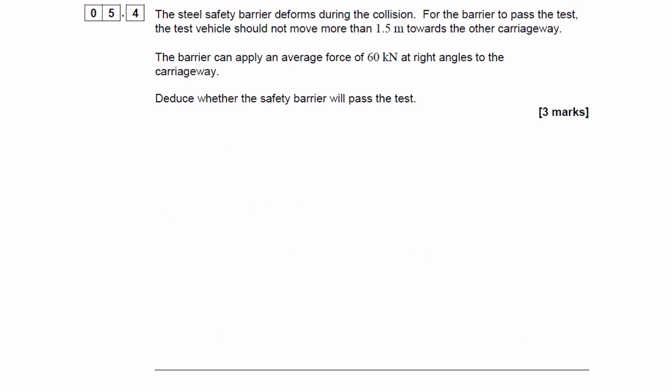For 5.4, the steel safety barrier deforms during the collision. For the barrier to pass the test, the vehicle should not move more than 1.5 metres towards the other carriageway. The barrier can apply an average force of 60 kilonewtons at right angles to the carriageway. Deduce whether the safety barrier will pass the test.